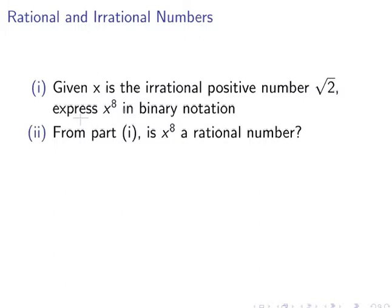So let's look at a question here. Given that x is the irrational positive number √2, express x^8 in binary notation. This includes a bit of binary numbers here.